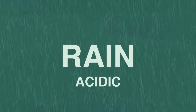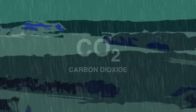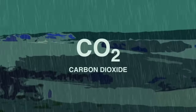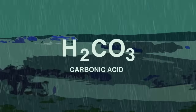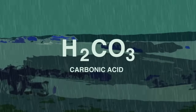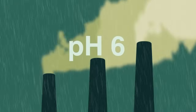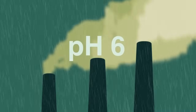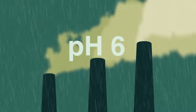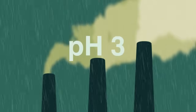Firstly, it's important to understand that rain is naturally slightly acidic. Whilst falling to the ground, the rain dissolves carbon dioxide from the atmosphere to form carbonic acid, a weak acid giving natural rain a pH of 6. It's when we burn fossil fuels that much stronger acids get into our rain to form acid rain with a pH as low as 3.